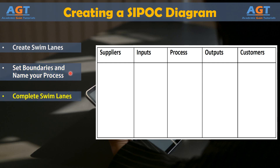Step 3: Complete Swim Lanes. You can complete SIPOC swim lanes in any order, but best practices usually have teams enter data in the order of process, outputs, customer, inputs, and lastly suppliers. Realistically, teams will think of things as they work through the process, so you'll be returning to swim lanes repeatedly to move information around and add new information. A SIPOC isn't usually a low-level or detailed map of the actual process, so keep teams high-level when completing the process swim lane. You can simply enter the name of the process in that section, or you can list some of the high-level steps required. Listing steps is a good exercise if teams aren't sure about outputs and inputs, as beginning to visualize the process usually helps ideas flow about how the process is connected to other processes and resources in the company.